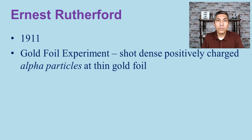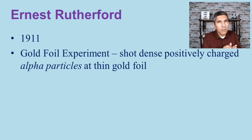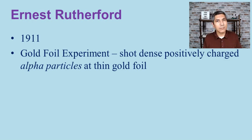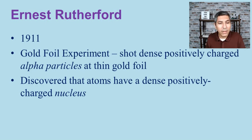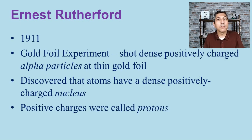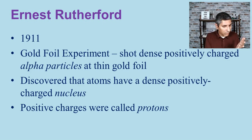Even more surprisingly, Rutherford found that some alpha particles ricocheted right back off the gold foil. He compared it to shooting a cannonball at tissue paper and having it bounce back — that's not supposed to happen. The only explanation was that something inside those gold atoms was also very dense and positively charged. He concluded that inside all atoms there is a dense, positively charged mass, which he called the nucleus, and he called those positive charges protons.